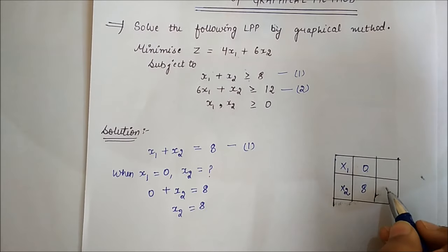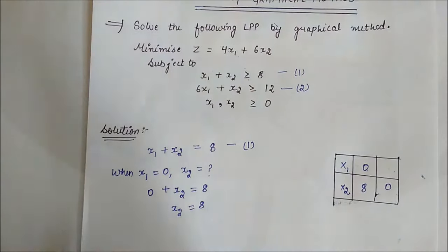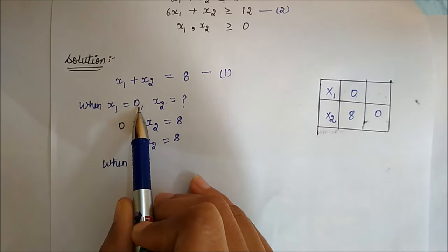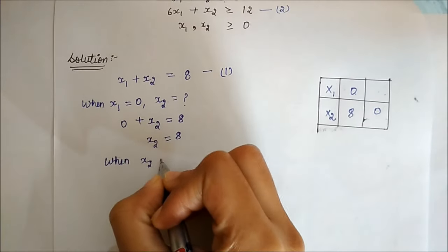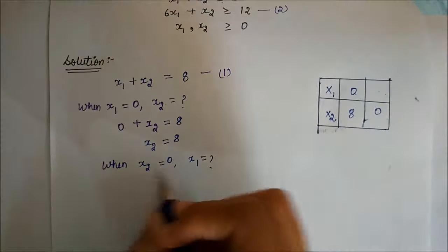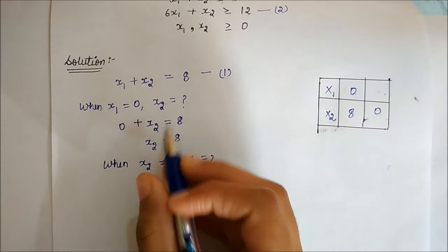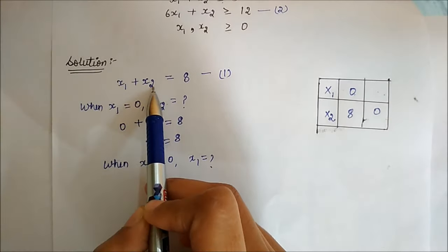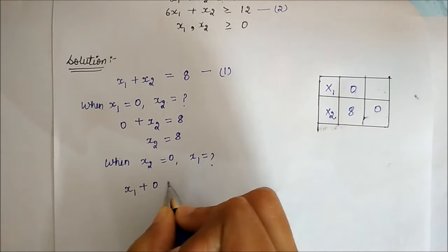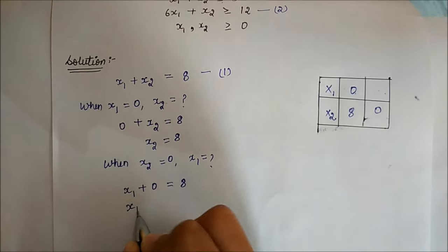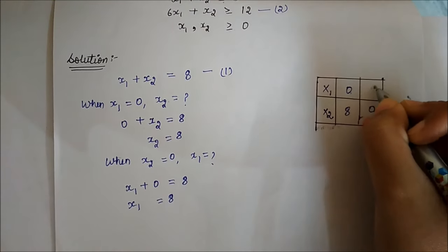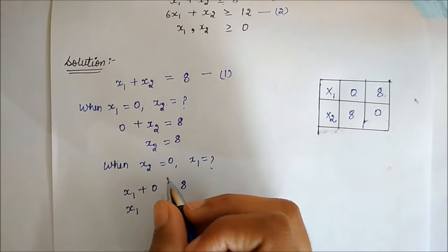Now we will take x2 equal to 0 and find x1. When x2 is equal to 0, we put x2 equals 0 into the equation x1 plus x2 equals 8. So x1 plus 0 equals 8, which gives x1 equals 8. So when x2 is 0, x1 is equal to 8.